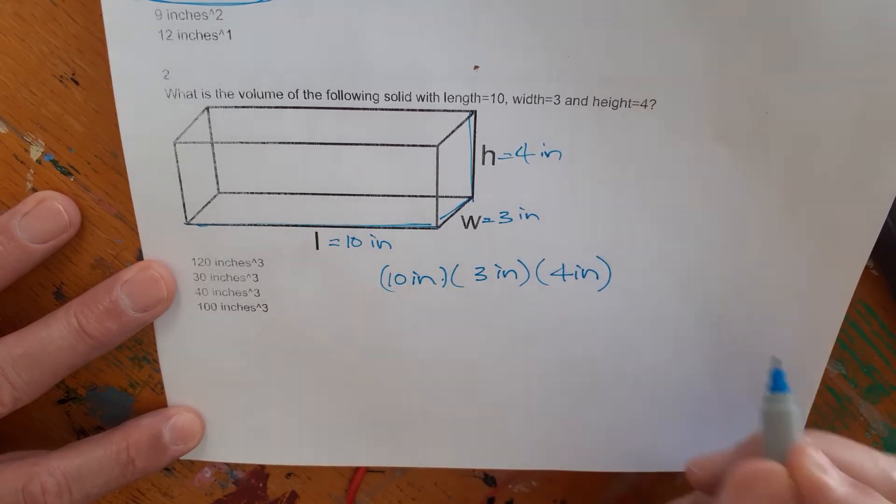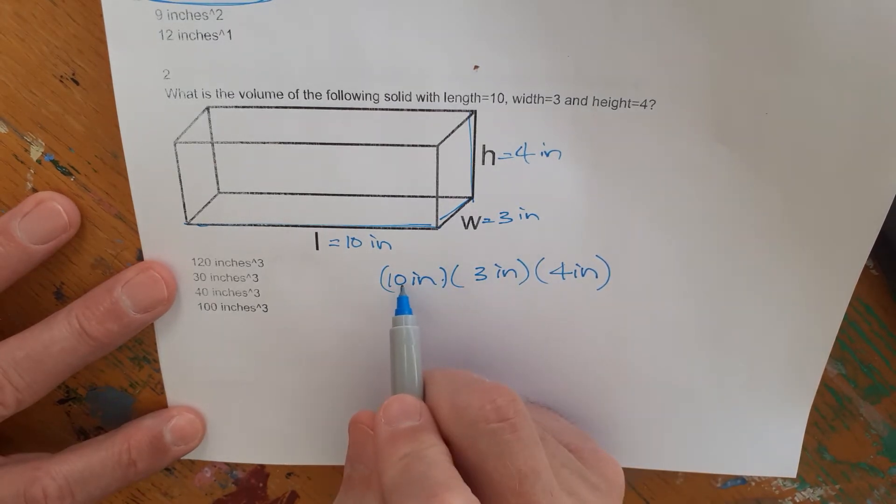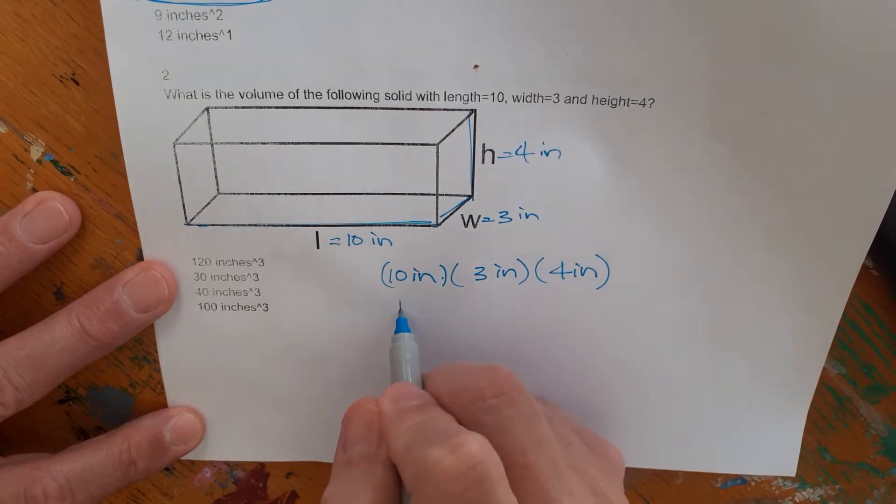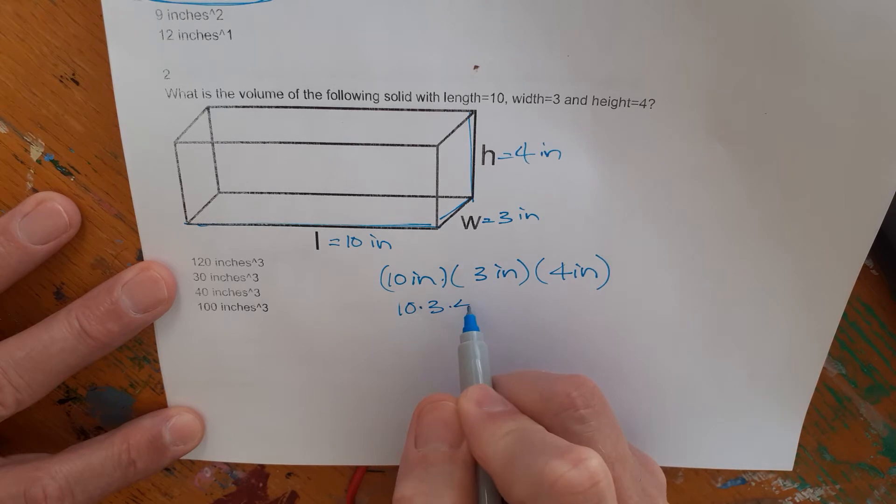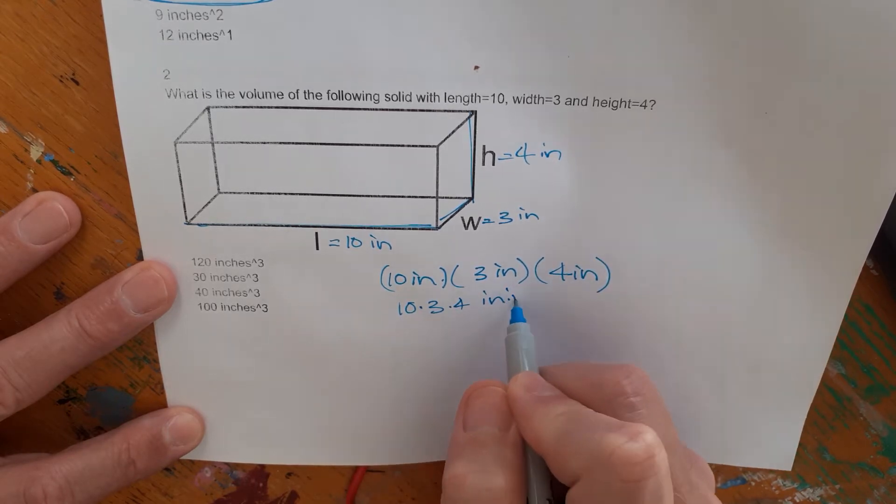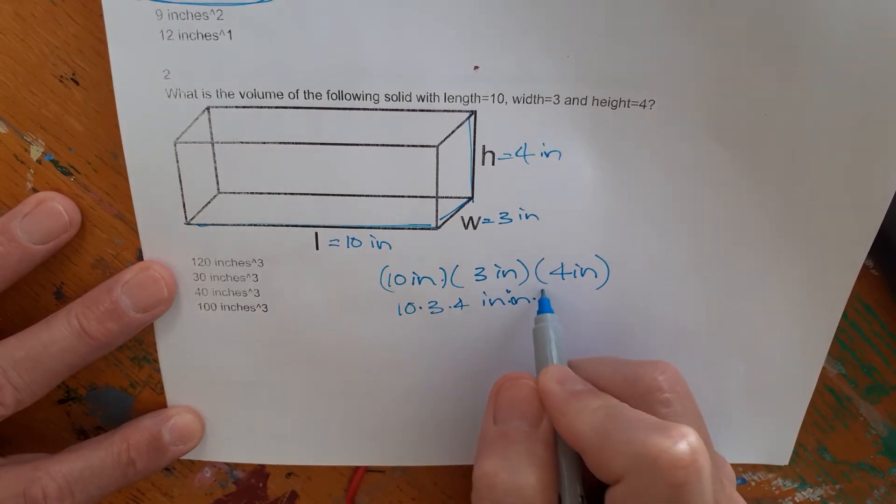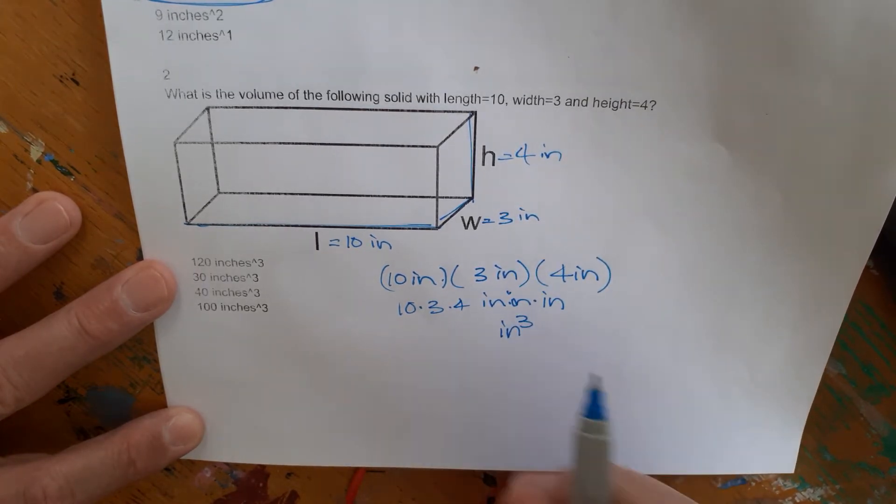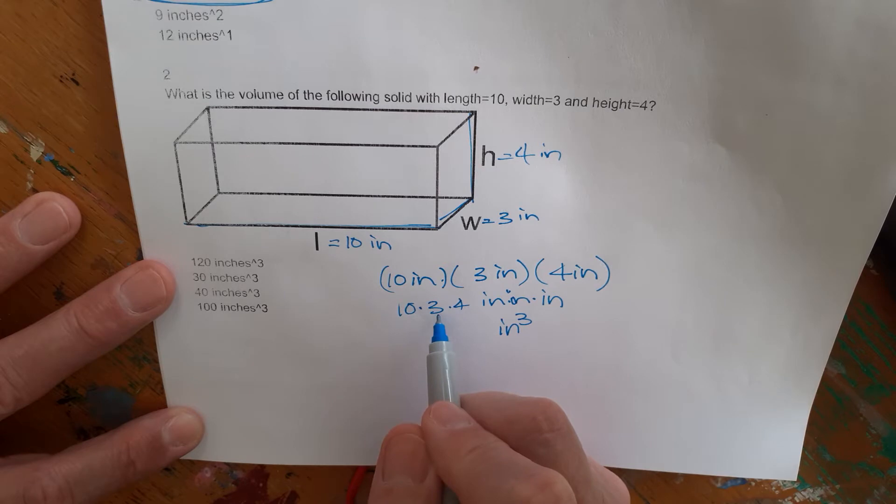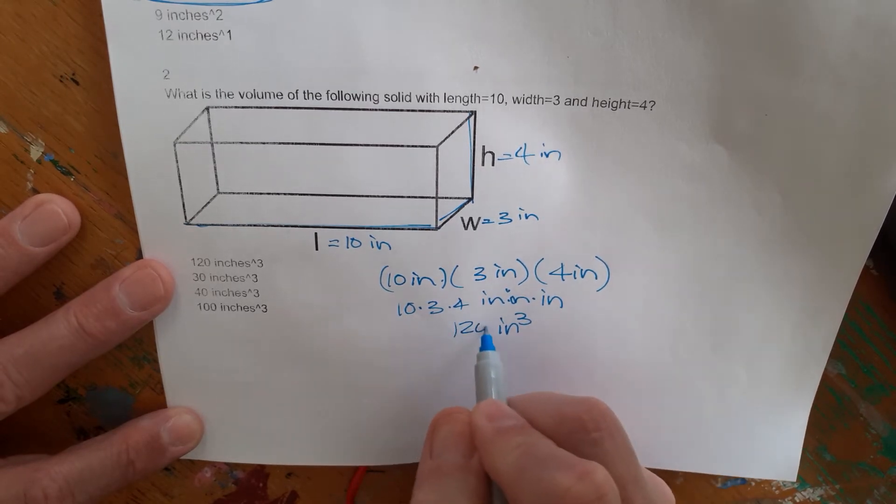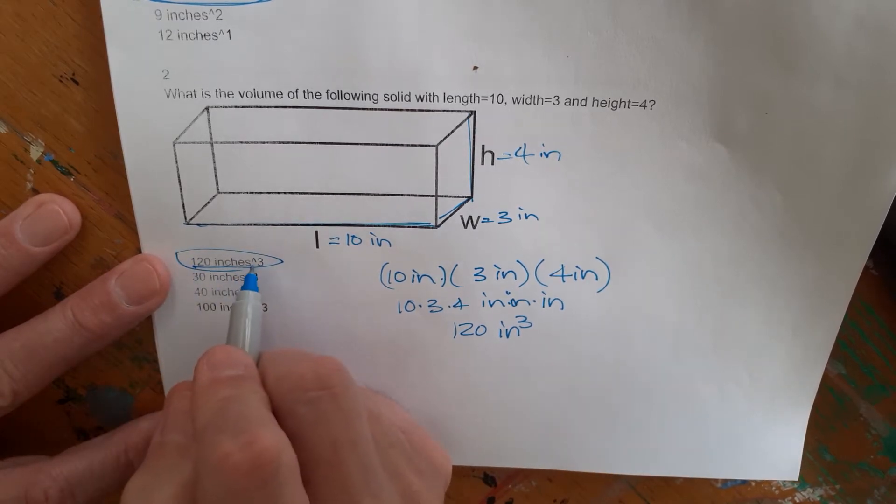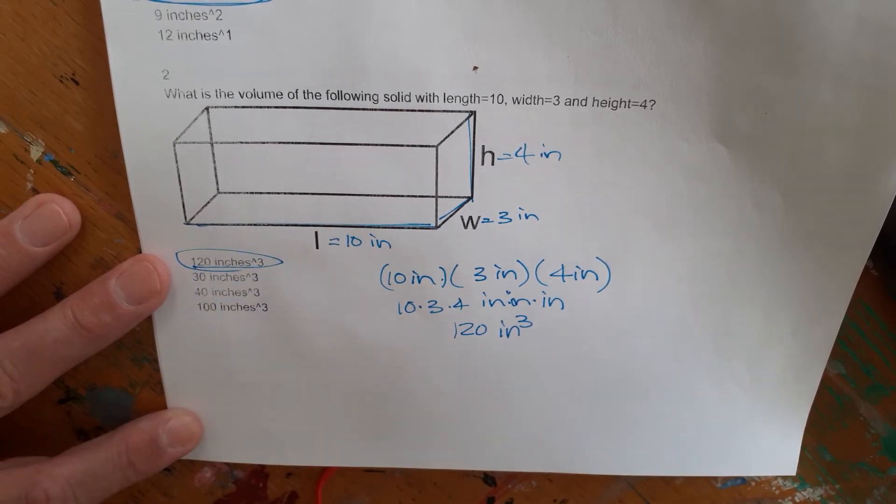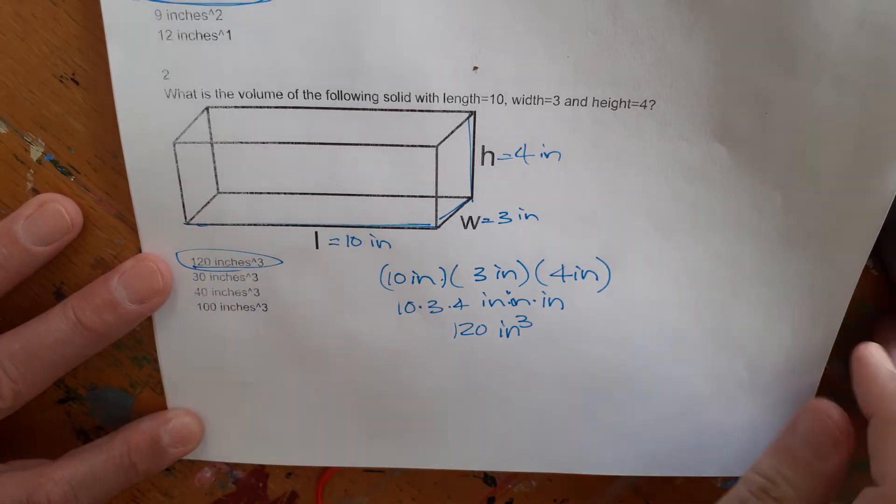So we're just going to go and do the problems. We're not going to explain all the background, but 10 times three times four comes out. And it's inch times inch times inch. There we go. And so we're going to have inches cubed. Good. Cause it's a volume. We have 10 times three, which is 30 times four, which is 120. So 120, notice of inches to the third power. Good. Because we're dealing with a volume.